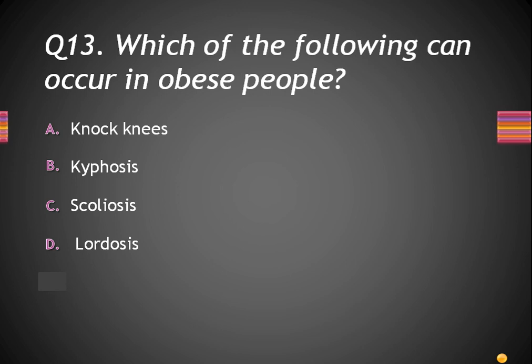The next question: Which of the following can occur in obese people? Options: A, knock knees; B, kyphosis; C, scoliosis; and D, lordosis. The correct answer is A, knock knees. When a person has more body weight, the weight falls on the legs, and if the bones are not capable of bearing that weight, they bend inward or outward. Problems from obesity can include knock knees, bow legs, flat feet, etc.